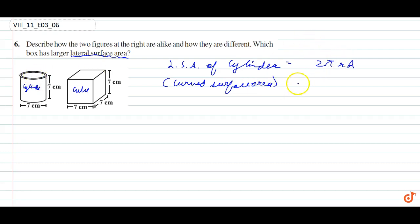So it's 2πrh, so it's 2 into 22 by 7, radius 7 by 2, and height is 7. They cancel, oh yeah they cancel. It's 154 centimeter square. Similarly, lateral surface area of cube...